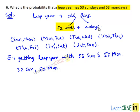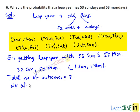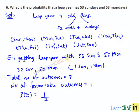But we want 53 Sundays and 53 Mondays. That means the extra two days must be one Sunday and one Monday. Total number of possible outcomes equals 7, since these two days can be any one of the 7 outcomes. Number of favorable outcomes equals 1, which is Sunday-Monday. Therefore, P(E) equals 1 divided by 7. The probability of getting a leap year with 53 Sundays and 53 Mondays is 1/7.